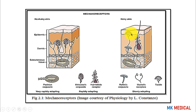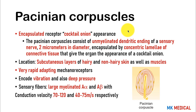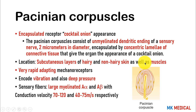Pacinian corpuscles are encapsulated receptors with a cocktail onion appearance — consisting of an unmyelinated dendritic nerve ending (2 micrometers in diameter) covered by concentric layers of connective tissue lamellae. They are found in the subcutaneous layers of both hairy and non-hairy skin, and also in muscles. They are very rapidly adapting mechanoreceptors encoding vibration and deep pressure. Their sensory fibers are large myelinated A-alpha and A-beta fibers with conduction velocities of 70–120 and 40–75 m/s respectively.